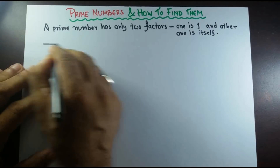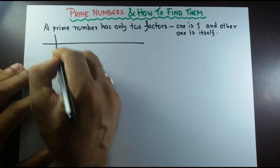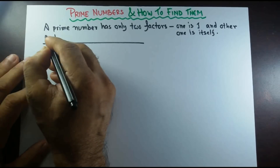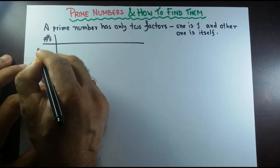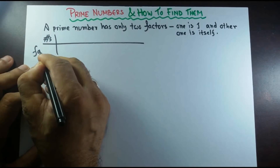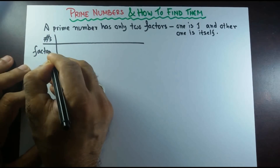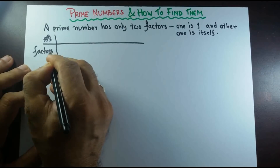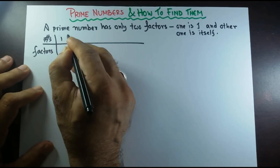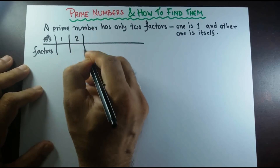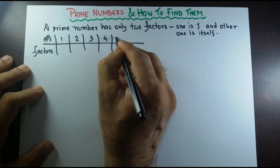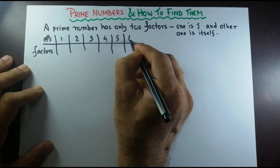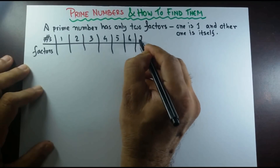First, let me write down those prime numbers that we already know — the numbers and their factors, how many factors they have. 1, 2, 3, 4, 5, 6, 7.